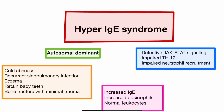In hyper-IgE syndrome, there is a defect in the JAK-STAT signaling pathway, which leads to impaired TH17 cells. This further leads to defective secretion of interleukin-17, whose function is recruitment of neutrophils. Defective interleukin-17 secretion leads to impaired neutrophil recruitment, causing inflammation without neutrophils. The absence of neutrophil-induced inflammation leads to the cold abscess, and the patient presents with cold abscess with a normal leukocyte count.